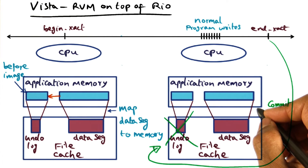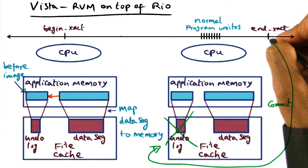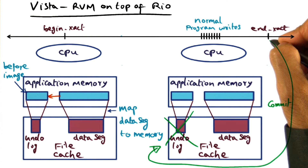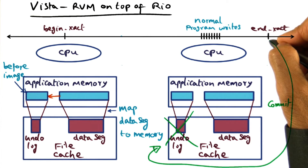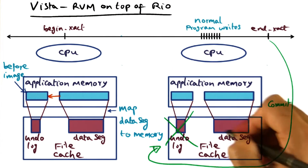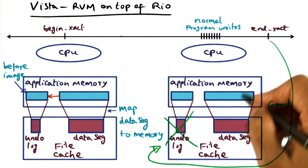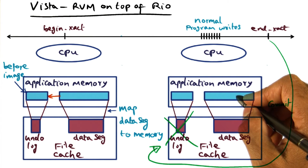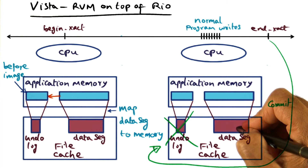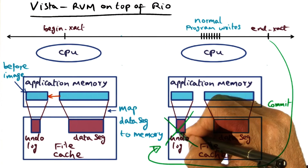As an aside, if you think about the LRVM implementation, the commit point is where there is heavy lifting to be done. In LRVM, at the commit point, the redo log created to reflect changes to persistent data structures in memory has to be forced to disk. But in Vista — which is an implementation of RVM on a persistent file cache — no work needs to be done at end transaction for commit. All the changes the application developer intended to commit to the data segment are already there. So at commit point, Vista only needs to get rid of the undo log.